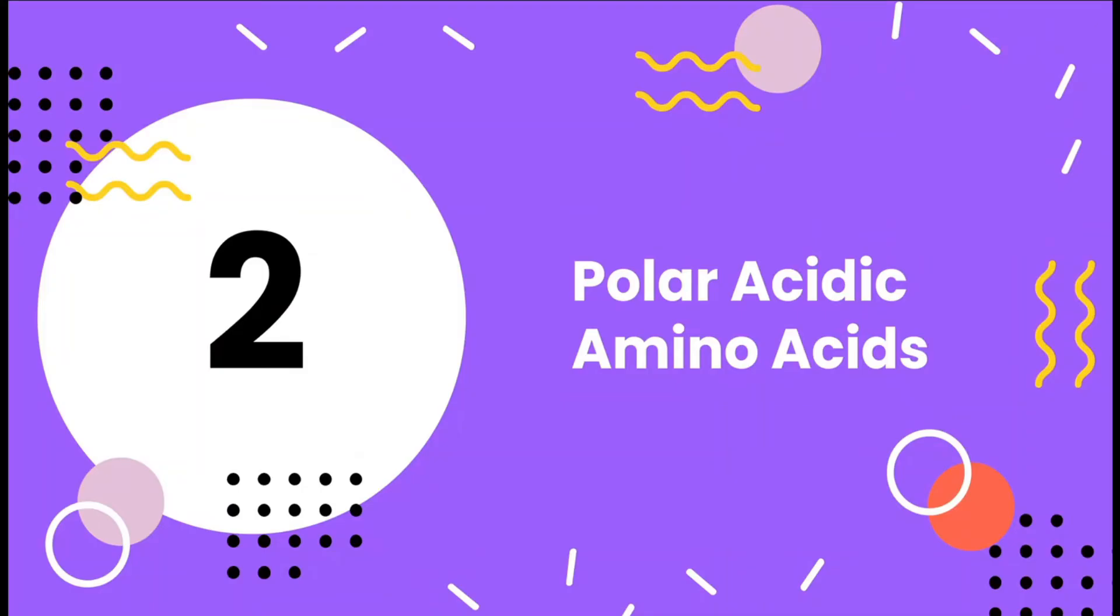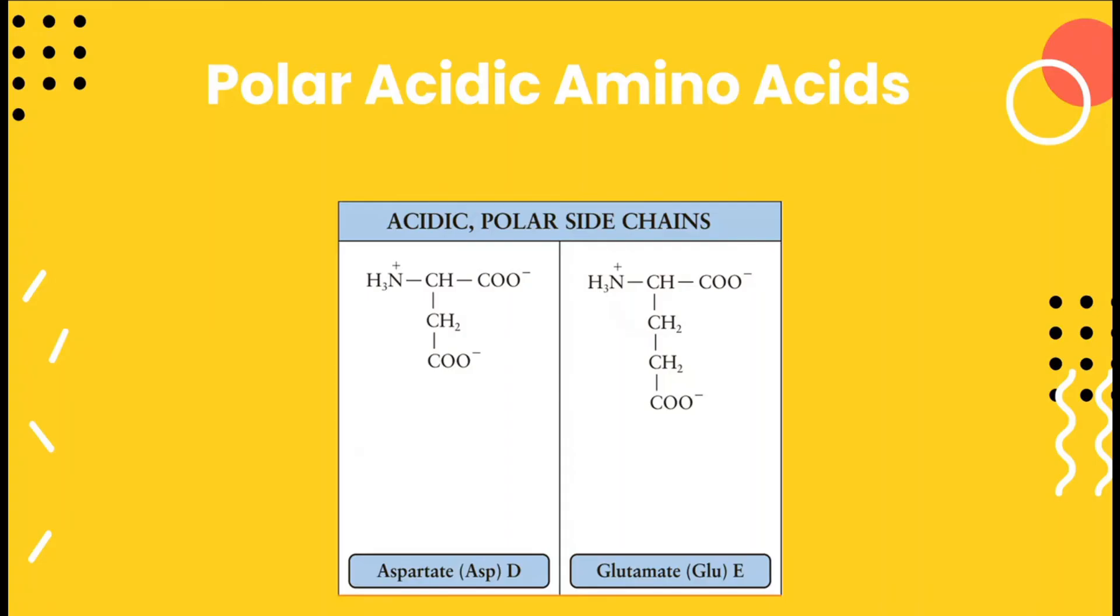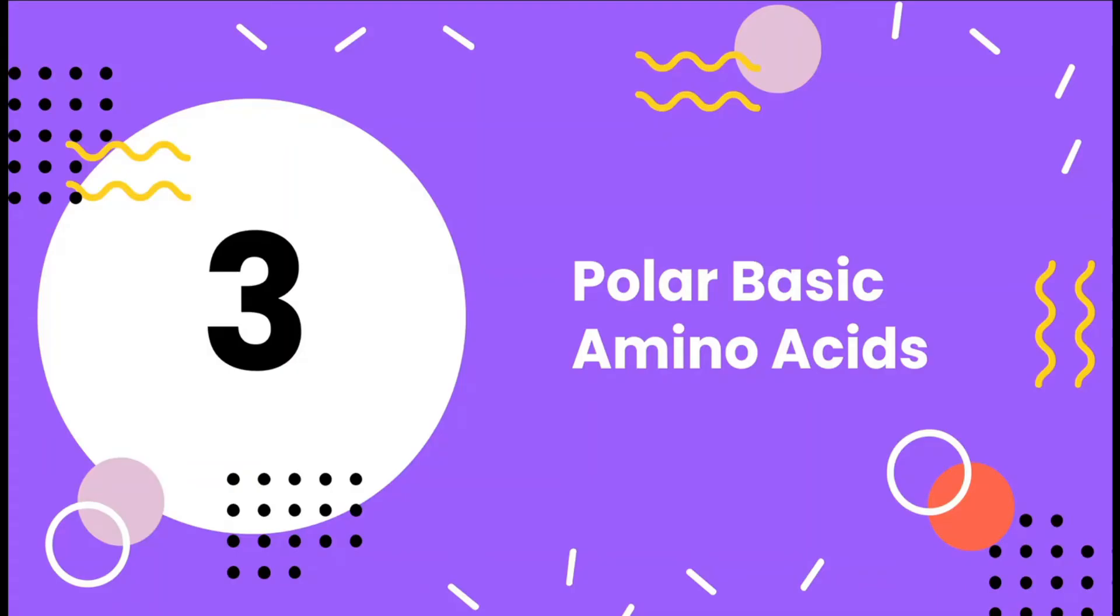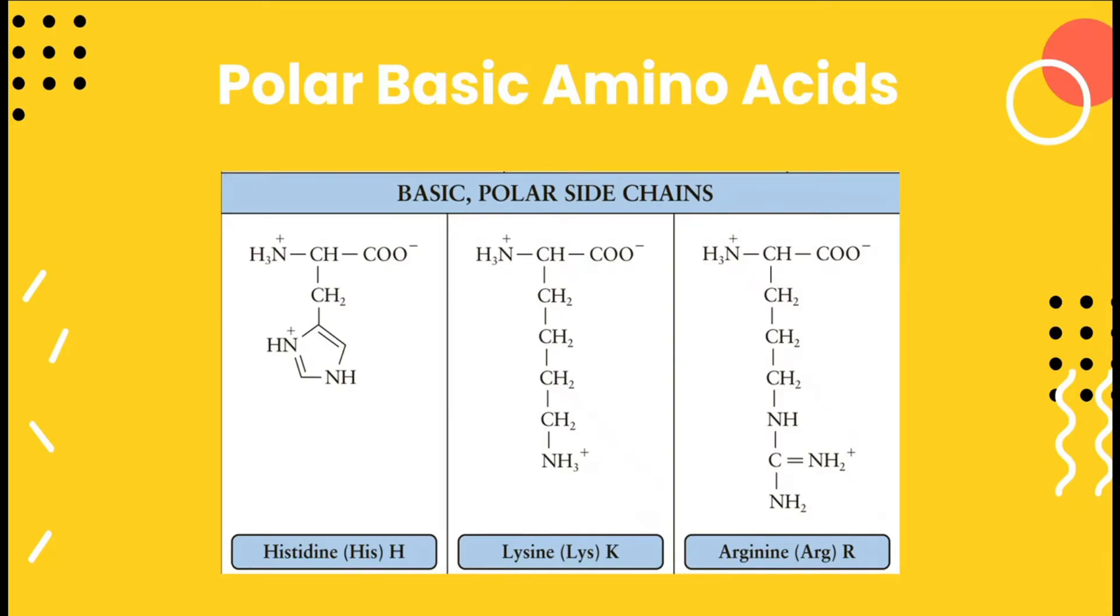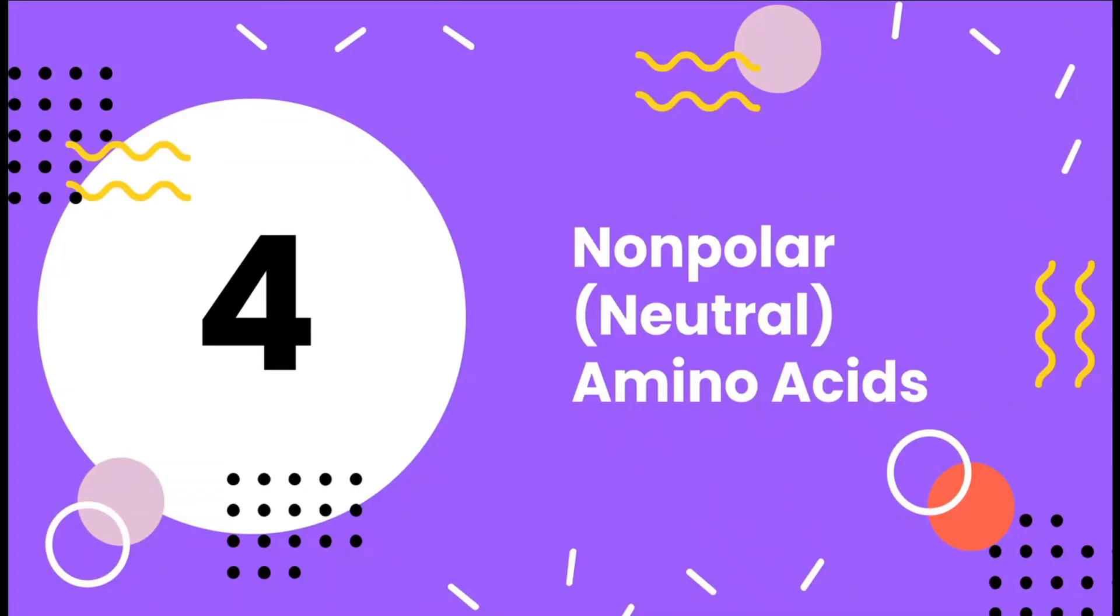Polar acidic amino acids are the second class. We have aspartate or the aspartic acid and glutamate or the glutamic acid. We have the polar basic amino acids: histidine, lysine, and arginine.